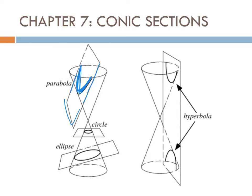If you slice parallel to the base — cutting it directly parallel — what you get when you open it up is a perfect circle cross-section. That's the case where you go through two sides parallel to the base. If you go through two sides at a diagonal, not parallel, that's when you get the ellipse shape, elongating the circle in one direction.